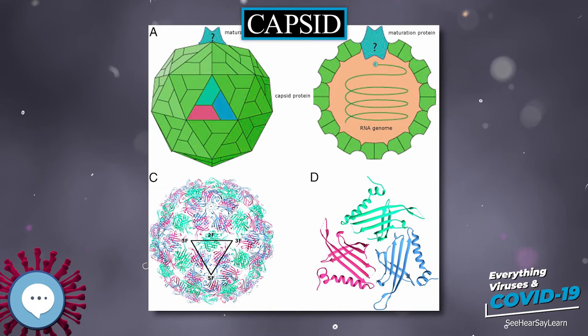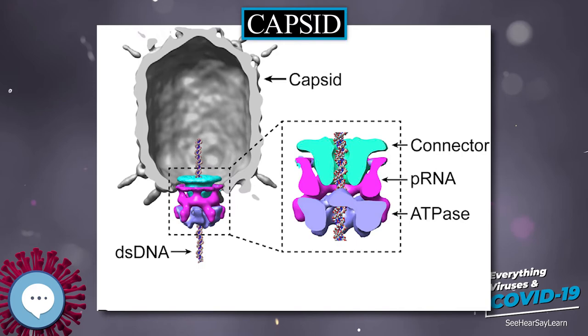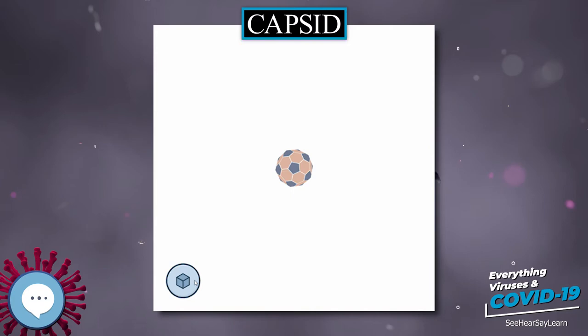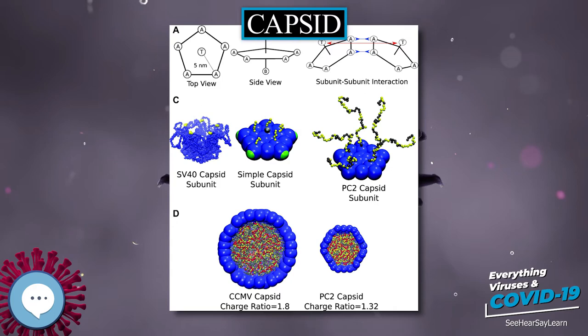Capsid. A capsid is the protein shell of a virus. It consists of several oligomeric structural subunits made of protein called protomers. The observable three-dimensional morphological subunits, which may or may not correspond to individual proteins, are called capsomers.